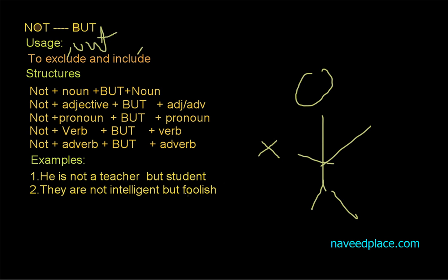We are saying no, he is not a teacher, but a student. He is a student, not a teacher. Get it? We are saying no, he is not a teacher, but yes, he is a student.